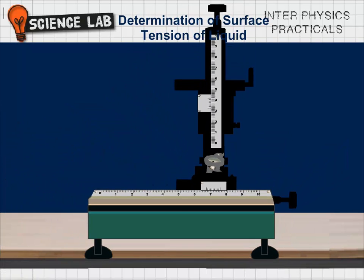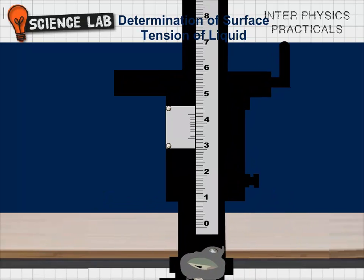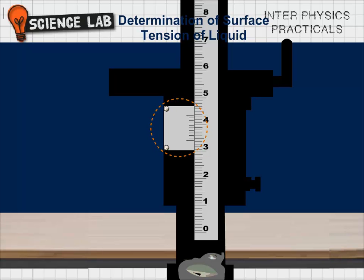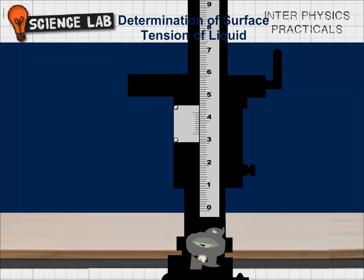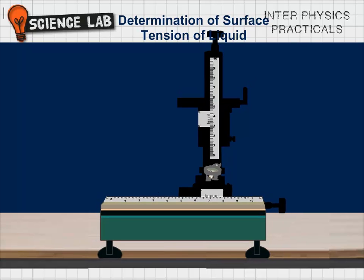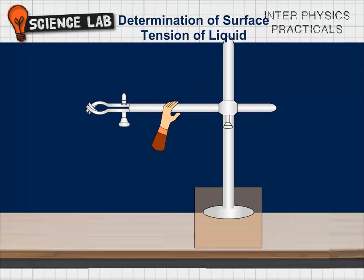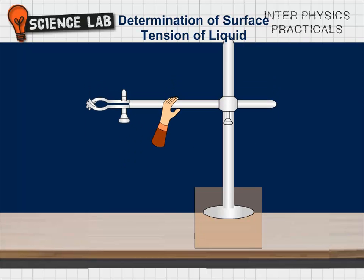One division on the vertical main scale S is equal to 1 mm. Number of divisions on the vertical vernier scale n is 10. Least count of the vertical scale of the microscope is S/n = 1/10 = 0.1 mm = 0.01 cm.